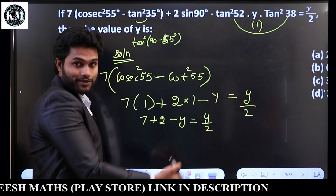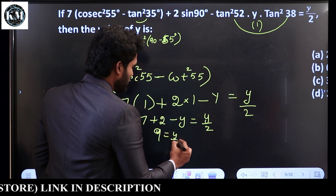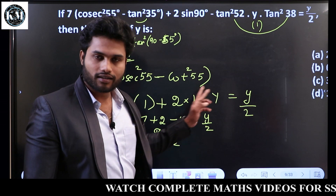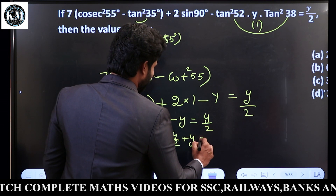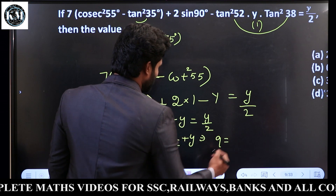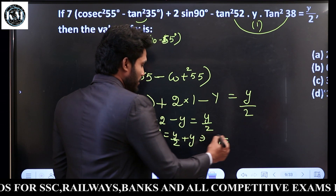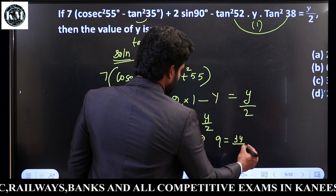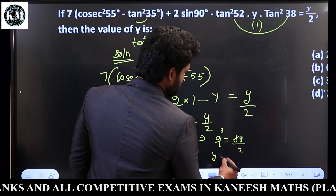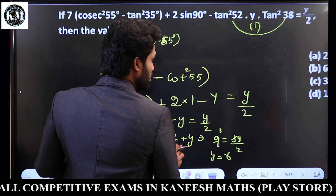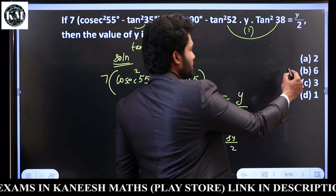So 7 plus 2 minus y equals y by 2. The minus y equals plus y. So 9 equals y by 2 minus y. Taking LCM, 9 equals negative y by 2. Rearranging: 3y divided by 2 equals 9, so y equals 6. Y equals 6 is the answer.